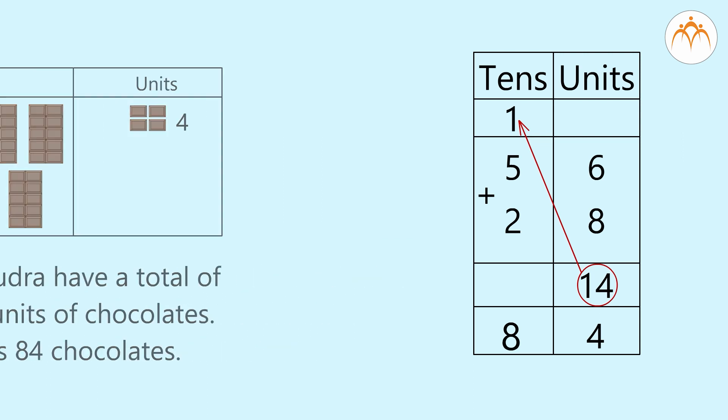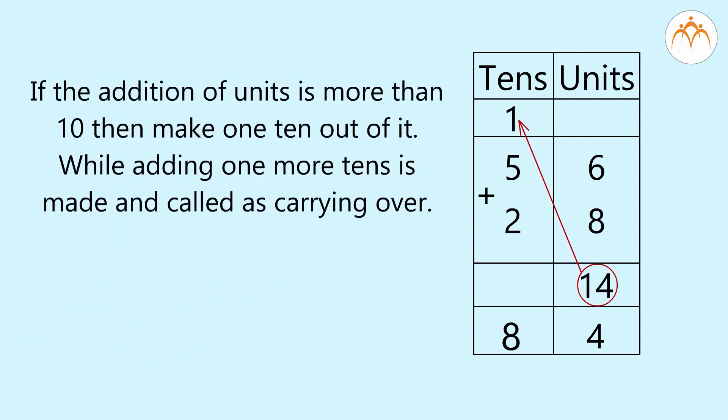Now, we know that if the addition of units is 10 or more than 10, then it is to be put aside so it becomes 1 ten, and then it is to be added to tens, which is called carrying over.